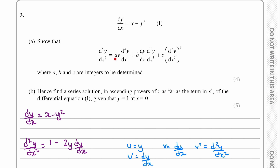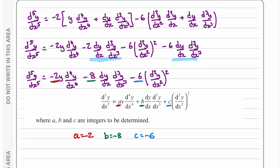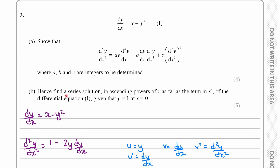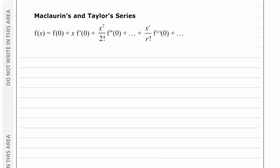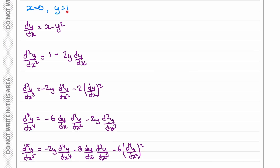Going back to our question, we can state the values of a, b, and c: a is negative 2, b is negative 8, and c is negative 6. For part b, we're asked to find the series solution in ascending powers of x as far as the x⁵ term. We'll use the Maclaurin series, having just worked out the first through fifth derivatives.